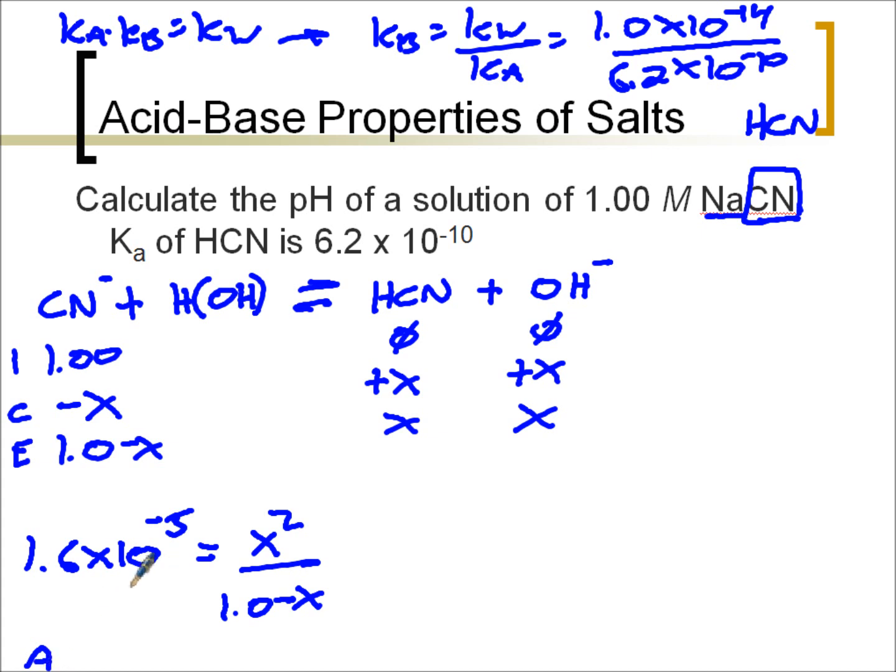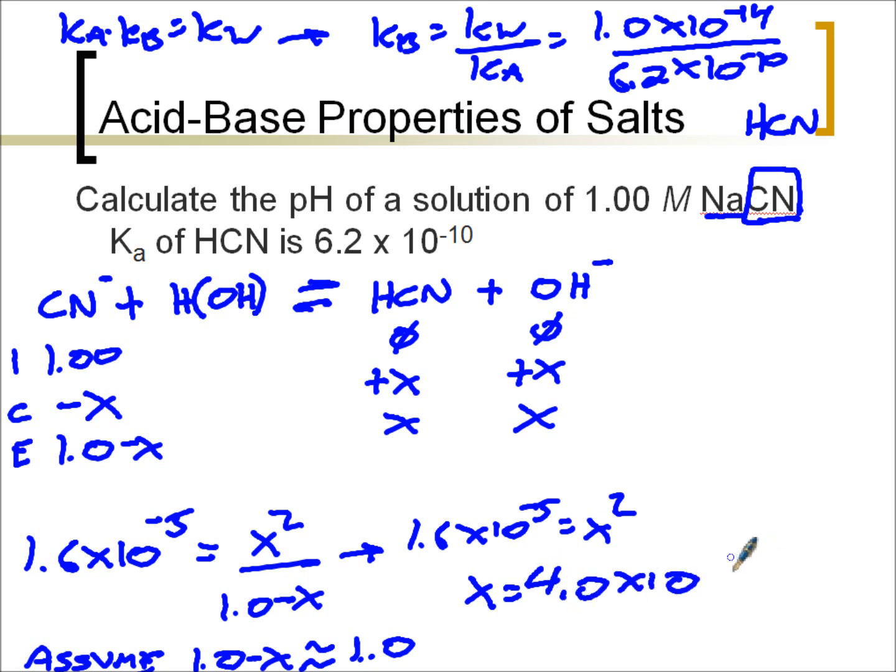Since my Kb is a very small number, I can make this assumption to make the math easier. Assume 1.0 minus X is equivalent to 1.0. So really, I'm just going to get 1.6 times 10 to the minus 5 equals X squared, because it's over 1. Now I'm going to solve for X. So I'm going to plug this in my calculator. I'm going to get X to equal 4.0 times 10 to the negative 3. A very small value of X.